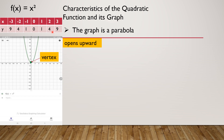The vertex of this graph is here at (0, 0), which is the minimum point. V is at (0, 0) — V means the vertex. It is the minimum point because the rest of the graph goes upward, which means this is the lowest point.